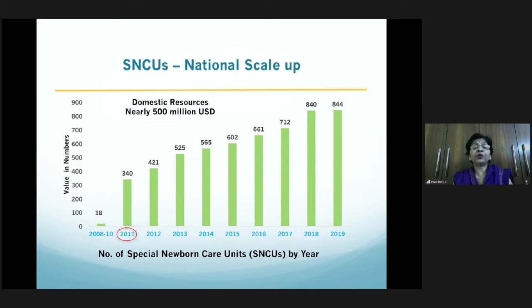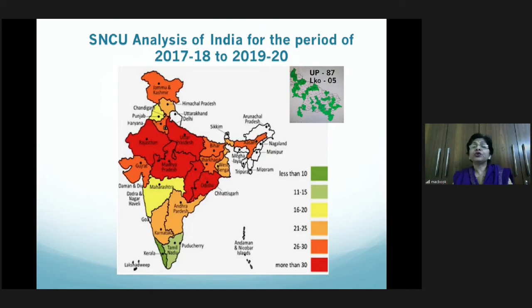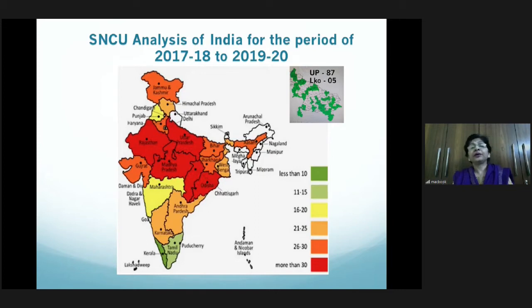The number of SNCUs has increased exponentially — from just 18 in 2008 to more than 800 in 2019. Looking at the map of India, the red regions show increased density of SNCUs. Uttar Pradesh alone has 87 such units. In Lucknow, there are five SNCUs, and our unit at KGMU is one of them, established with the help of the National Health Mission.